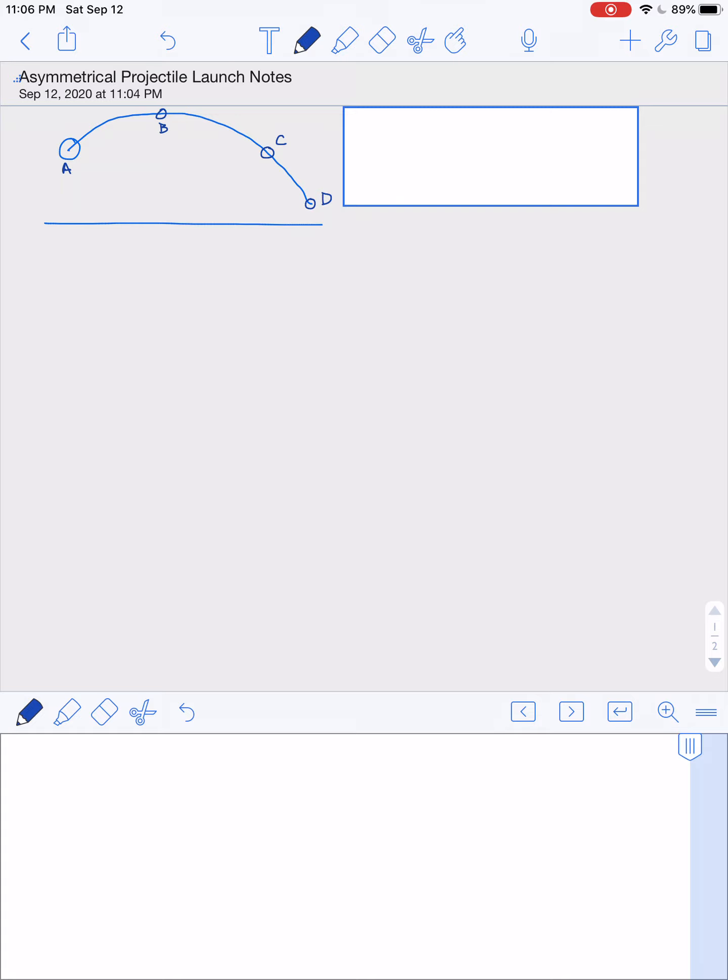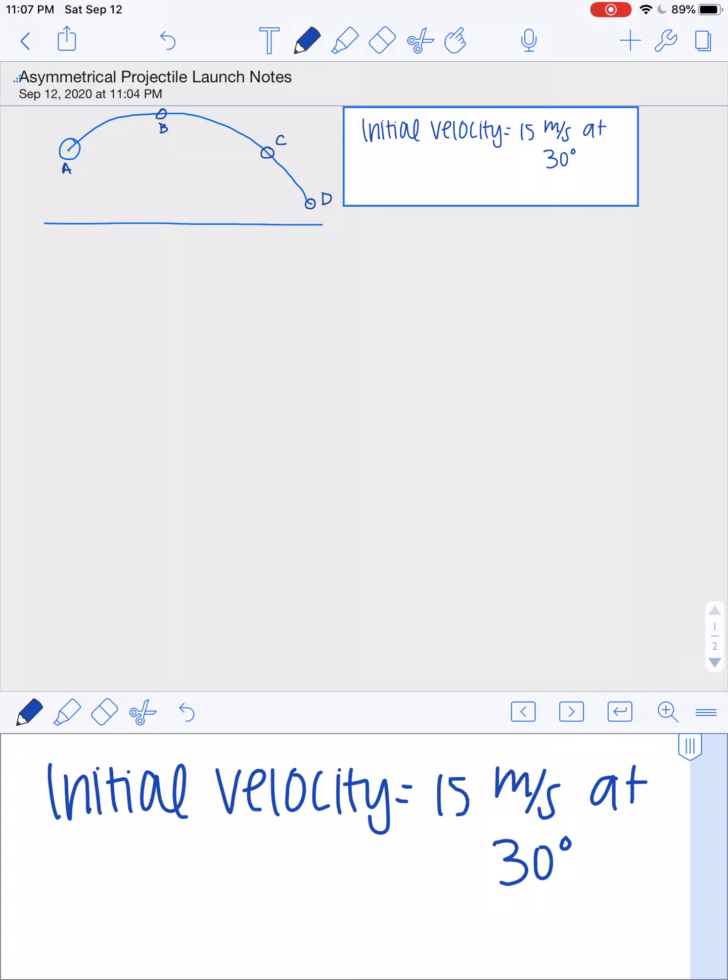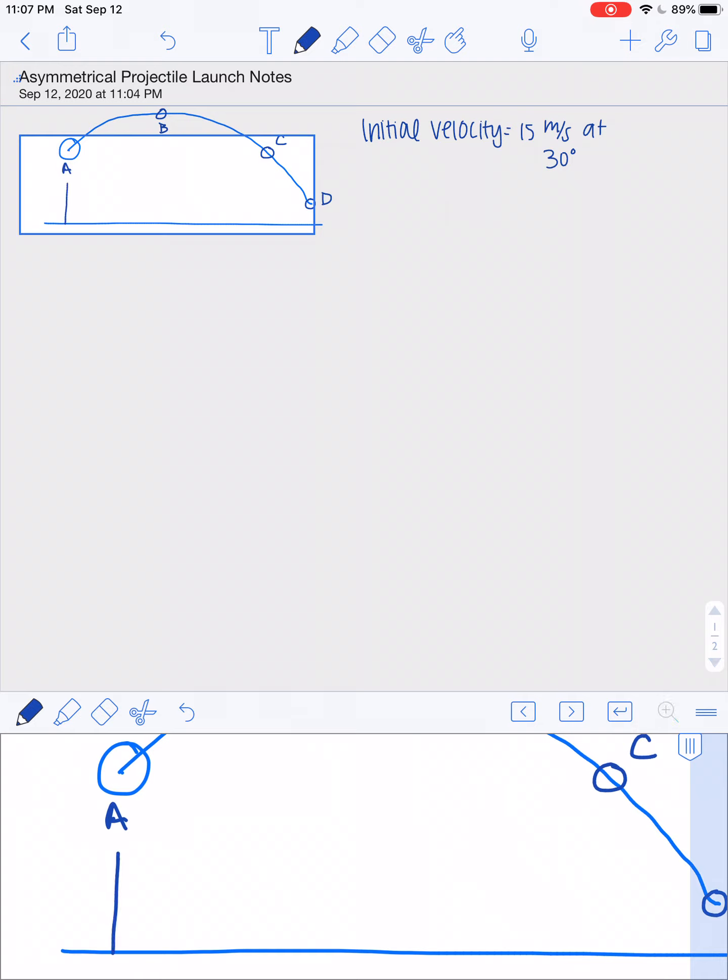So we have some given information again. The initial velocity is 15 meters per second at 30 degrees from the horizontal. And A starts 10 meters above the ground.